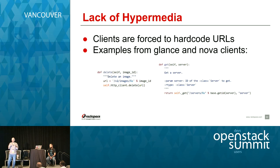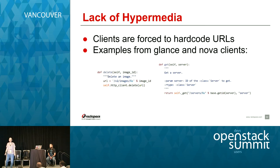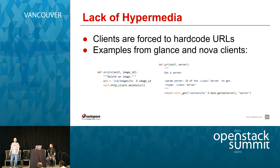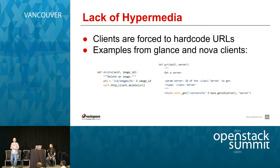While the catalog is a great implementation of hypermedia, when you start talking to individual servers there's no hypermedia, or the hypermedia implementation is not that good. You as a client may be forced to hard-code URLs for different things. I have two examples from Glance and Nova — you can see they hard-code URLs. The Glance one even hard-codes the version number, so that code will break when there's a version change. These are the official clients, by the way.